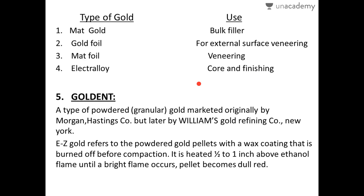Goldent is a type of powdered or granular gold originally marketed by Morgan Hastings Corporation, and later by Williams Gold Refining Corporation in New York. This is an objective point — originally it was Morgan, later modified by Williams Gold Refining Corporation. Goldent is also known as EZ gold.